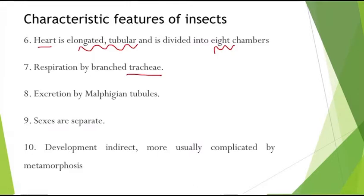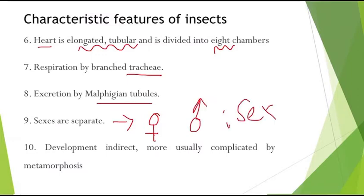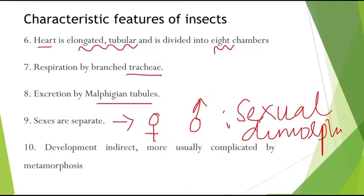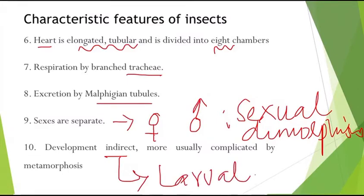Respiration is by trachea and excretion is by Malpighian tubules. The sexes are separate in insects — you can see a female and a male insect separately, which is called sexual dimorphism. Development is indirect, meaning there is a larval stage in the life cycle most of the time, and the life cycle is completed through a cycle of complicated events called metamorphosis. These are the 10 important characteristic features of insects.